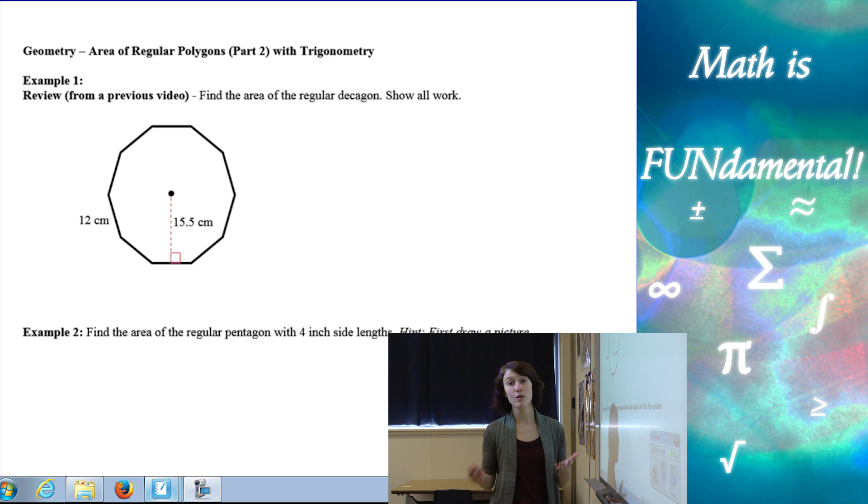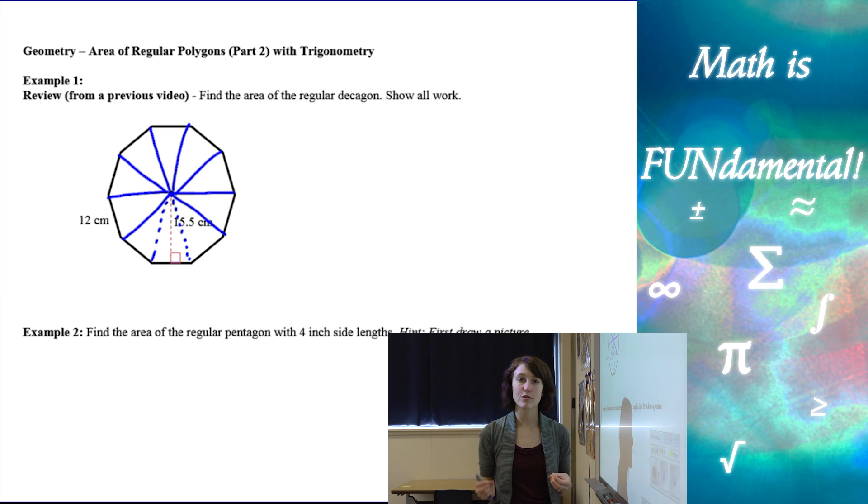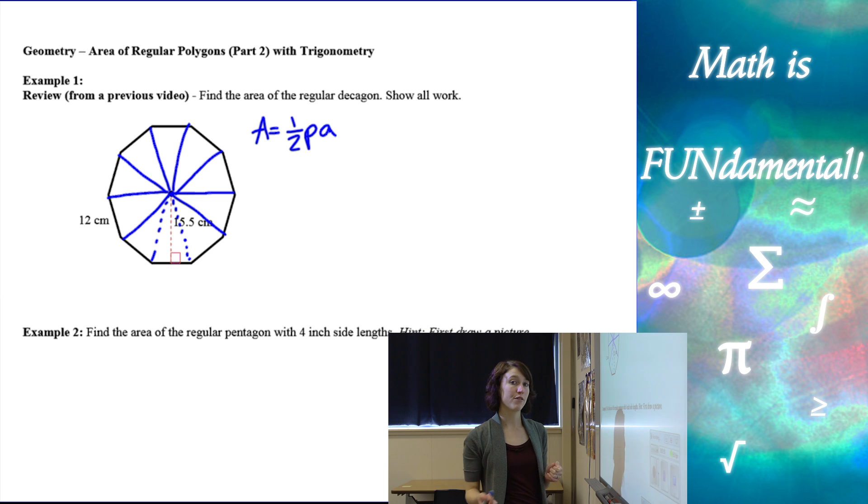Alright, so let's start with a review example here. We have a regular polygon. We can take our regular polygon and split it into triangles like this from the center out to each vertex, and then we can find the area of one of those triangles and then just multiply it by the number of triangles. We had our formula in our last one. It ends up being one half times the perimeter of the regular polygon times the apothem of the regular polygon.